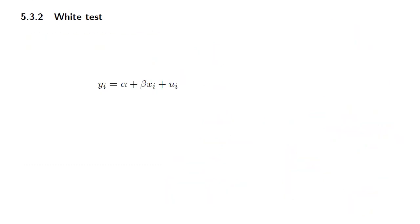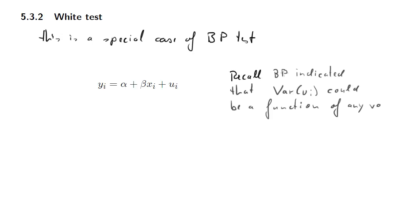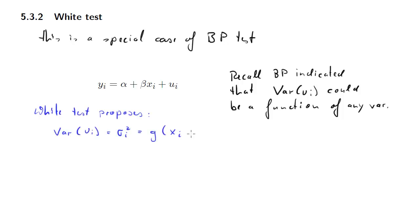So let's move on to the White test. It turns out that the White test is really a special case of the Breusch-Pagan test. Recall that for the Breusch-Pagan test, the proposition was that the variance could potentially be a function of any sort of variable, those included and those not included in the regression model.